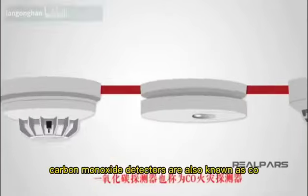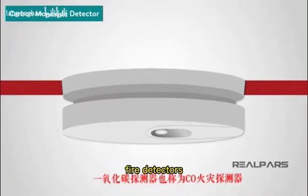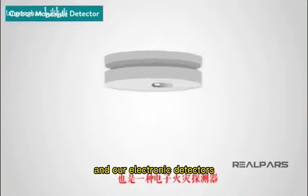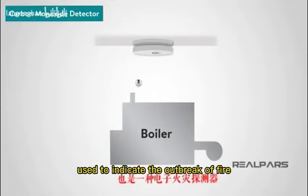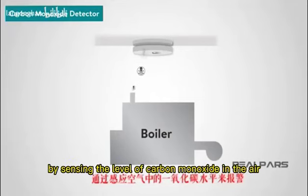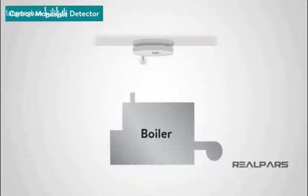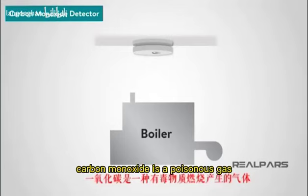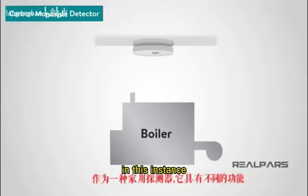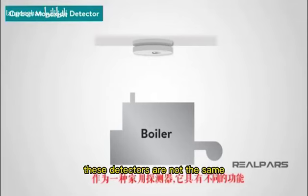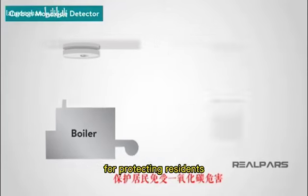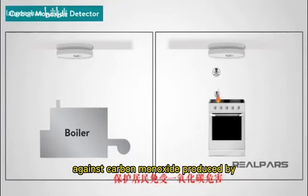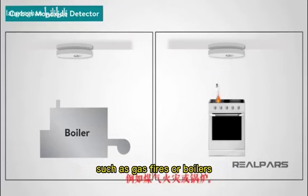Carbon monoxide detectors are also known as CO fire detectors and are electronic detectors used to indicate the outbreak of fire by sensing the level of carbon monoxide in the air. Carbon monoxide is a poisonous gas produced by combustion. In this instance, these detectors are not the same as carbon monoxide detectors used in the home for protecting residents against carbon monoxide produced by incomplete combustion in appliances, such as gas fires or boilers.